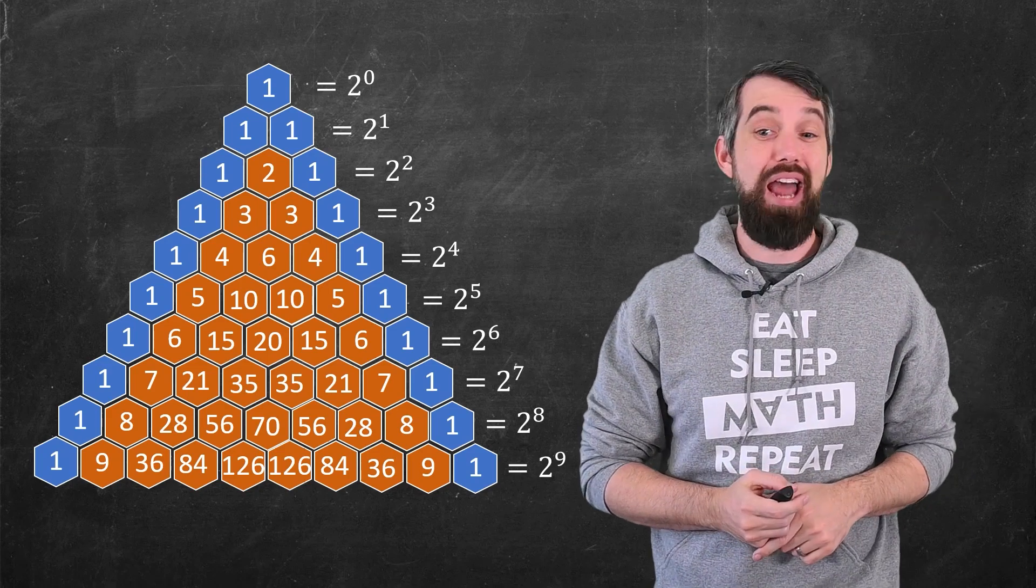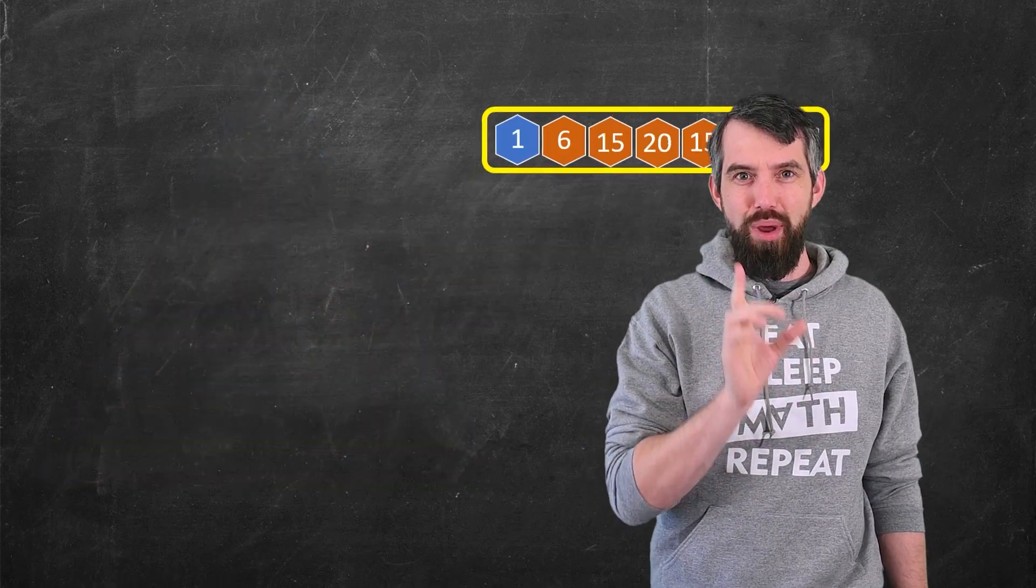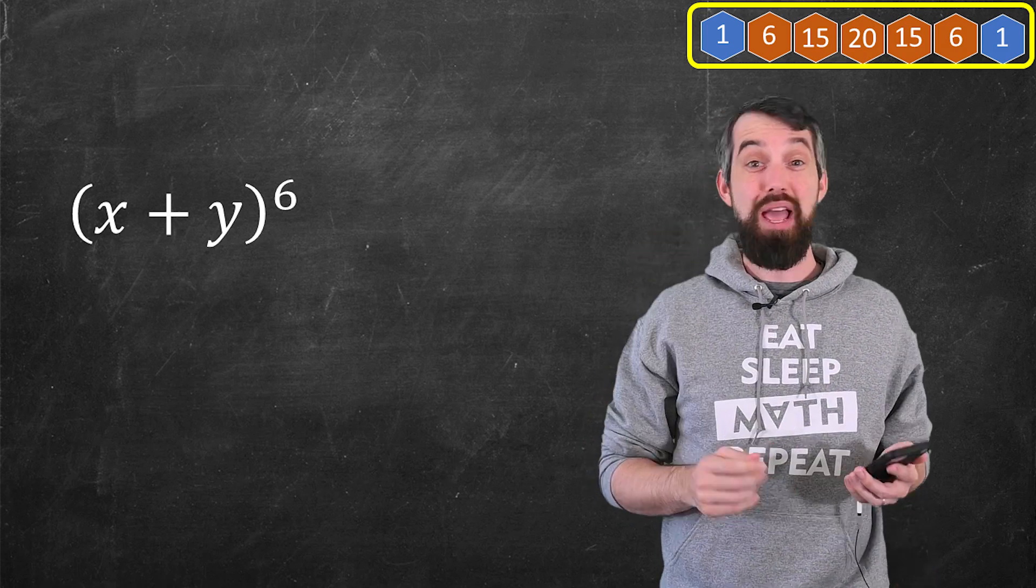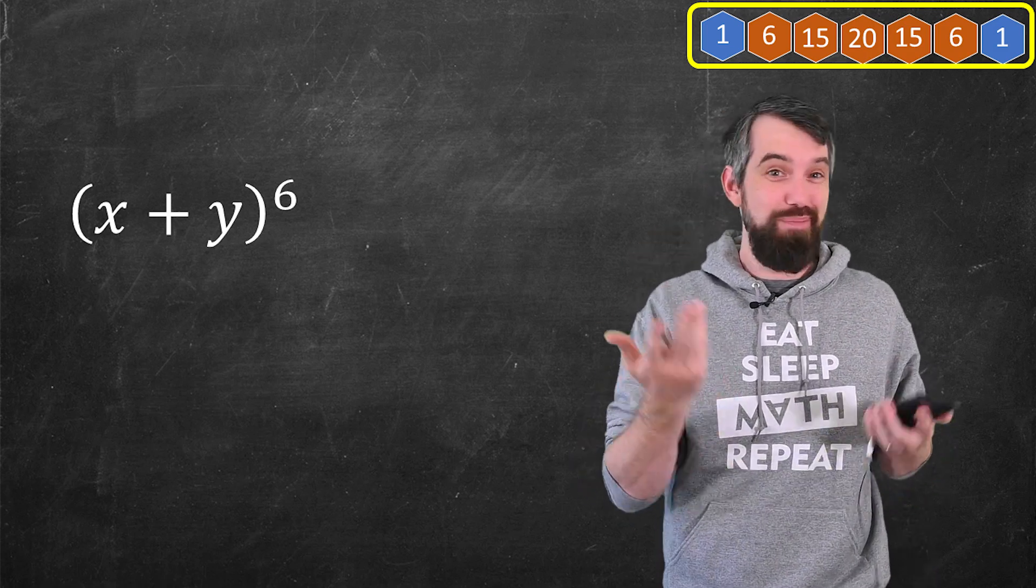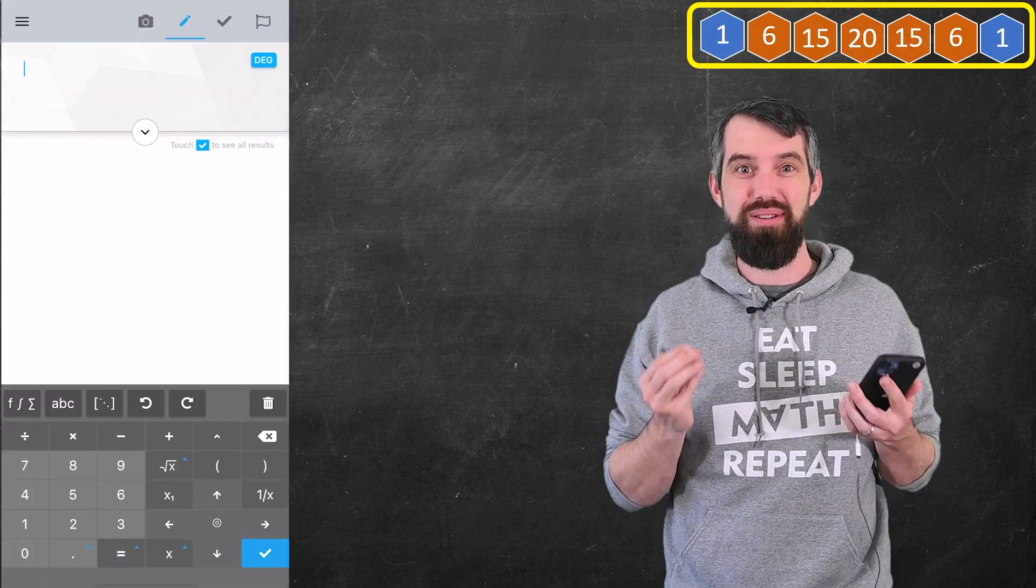Let's take just for example the 6th row, just so we can have it here and take a look at it. And I'm going to compare this to the expansion of x plus y to the power of 6. Now I could try to expand this by hand, but I'd probably make a mistake and I really don't want to, so I'm going to turn to a calculator to help me out.